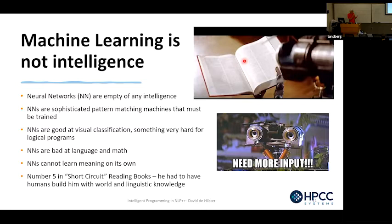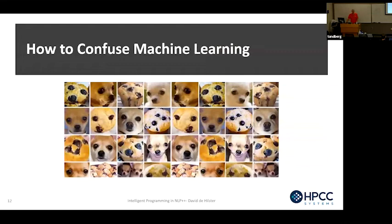There's a famous scene in the movie Short Circuit where Number 5 is reading a book saying 'more input, need more input.' The only way that can happen, I claim, is that humans had to have built into him world knowledge and linguistic knowledge. It doesn't happen on its own. I sort of have a love-hate relationship with machine learning because people say it's solved everything, and in my area it has solved not a whole lot.